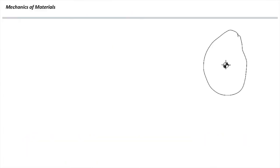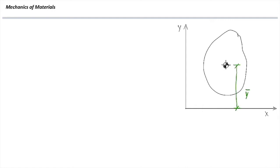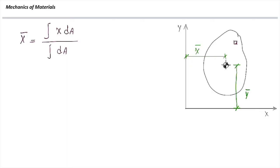But how do we determine the centroid? First, we need to define the origin from which we measure the centroid's distance. Distance of the centroid to the x-axis is shown by y-bar, and distance of the centroid to the y-axis is shown by x-bar. We can define x-bar from the integral equation: x-bar equals the integral of x multiplied by dA divided by the integral of dA. dA stands for one tiny small area, and x and y are the coordinates of those tiny areas from the origin.